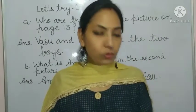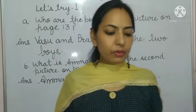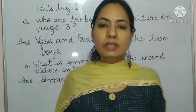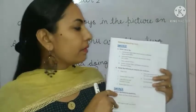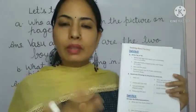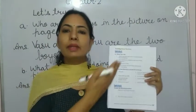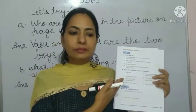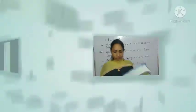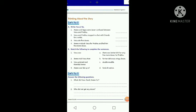Now we will do Let's Try 2. Turn to page number 17. This is Let's Try 2, and in this we have to do 'thinking about the story.' We need to complete question number 8. Open your books and we will do it together. In Let's Try 2, thinking about the story, we have to write down the answers. Our first question, question number 8, says: write yes or no. Some statements are given — we have to read them and then tell if they are true or false by writing yes or no.